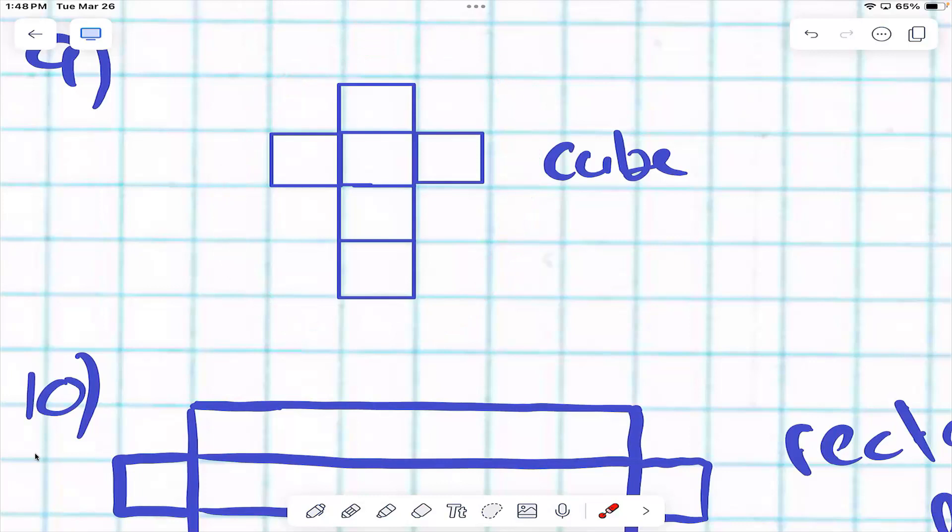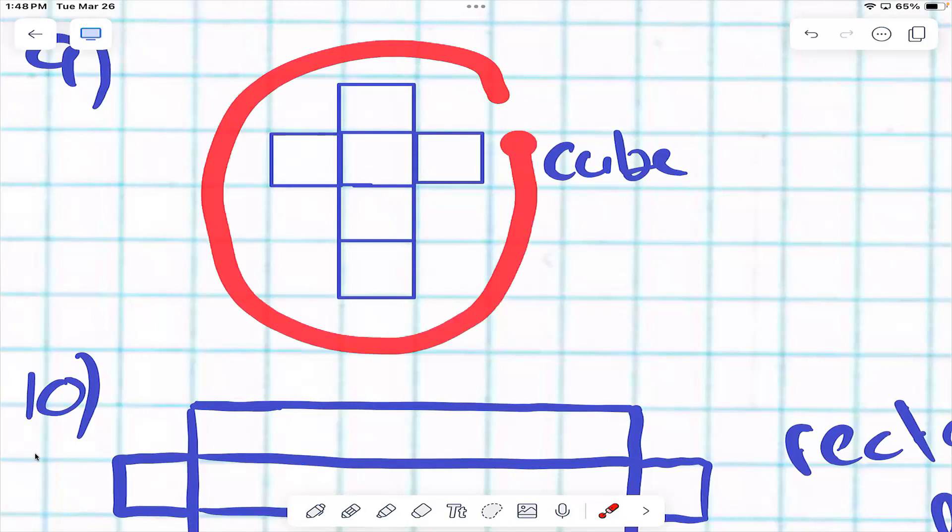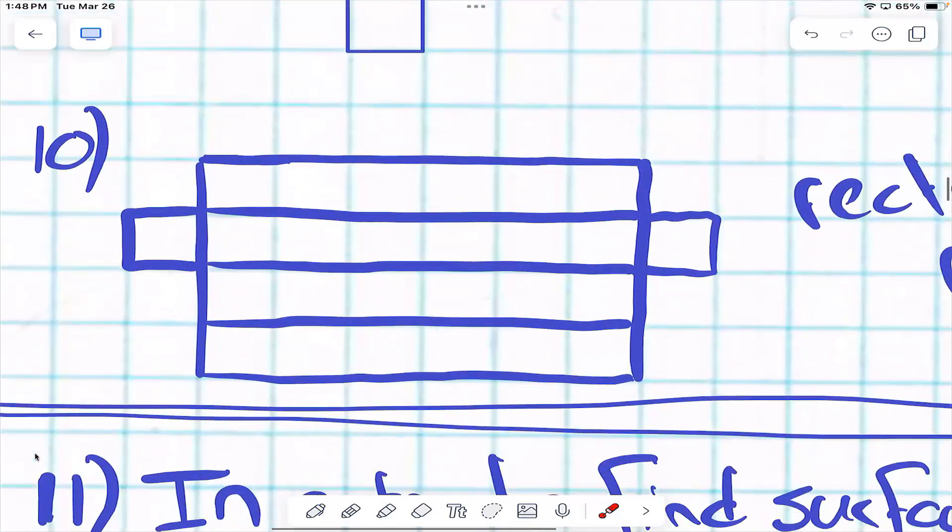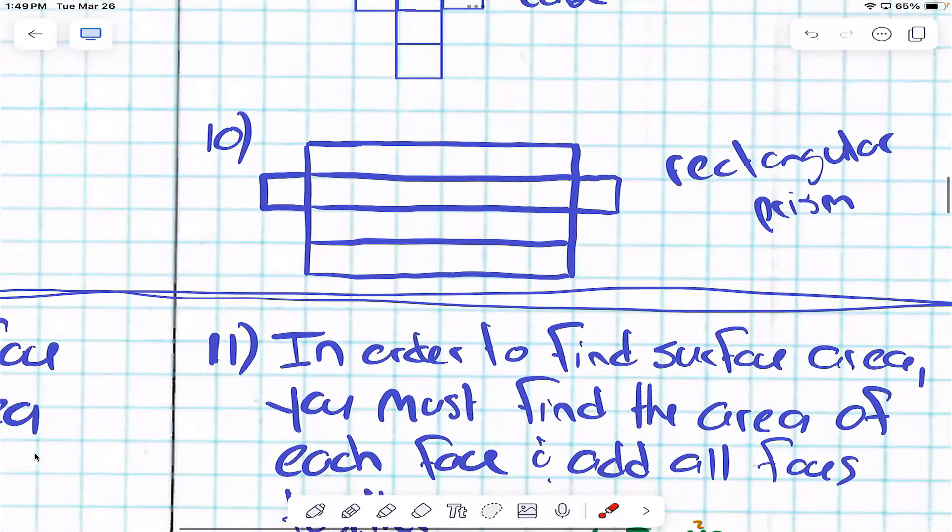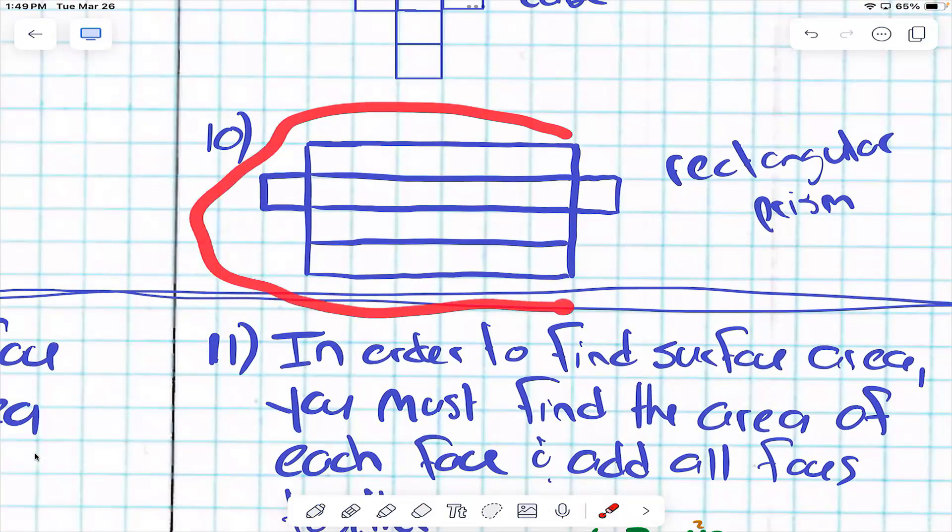What do we have in our classroom that reminds us of a cube? Kleenex box. Could we take our Kleenex box and flatten it and when all of the different faces kind of make something like that? Do we have one of these in our classroom too? What's it called? It's in the shape of a rectangular prism, right? Does that make sense? Okay, here we go.